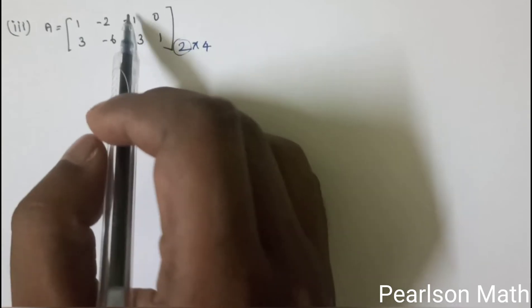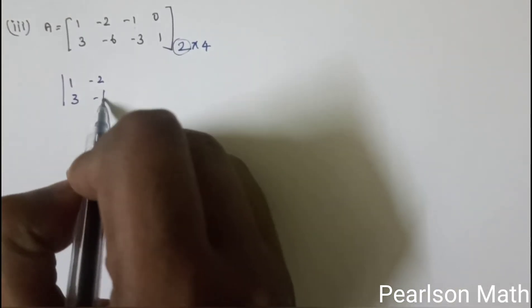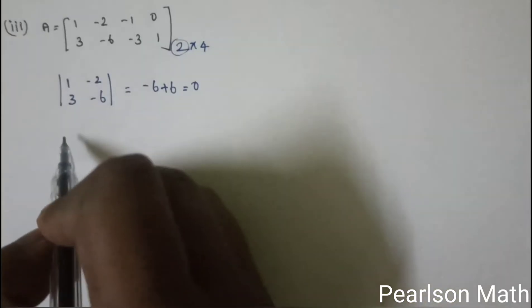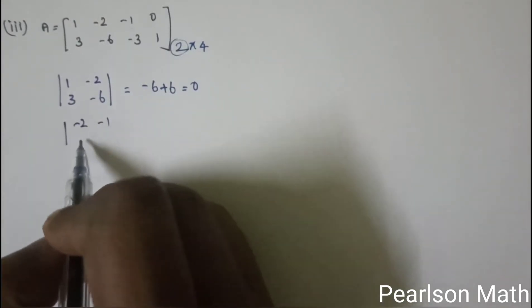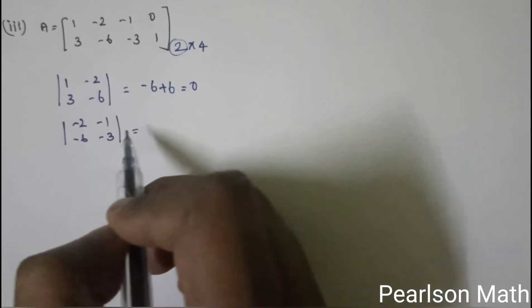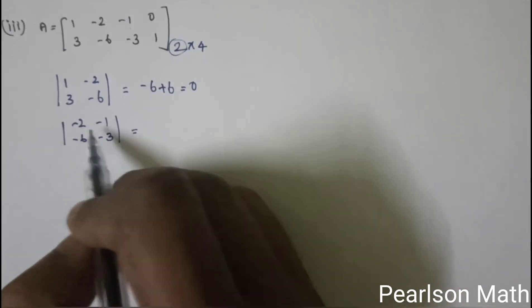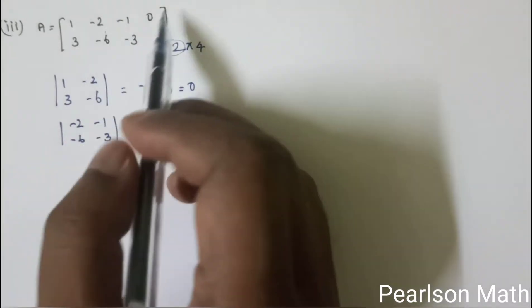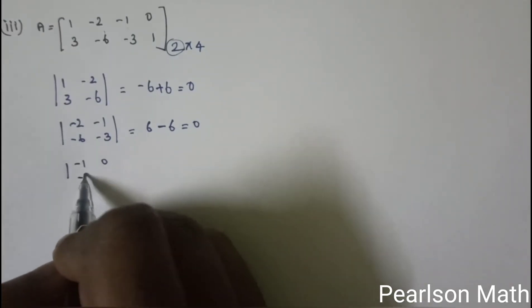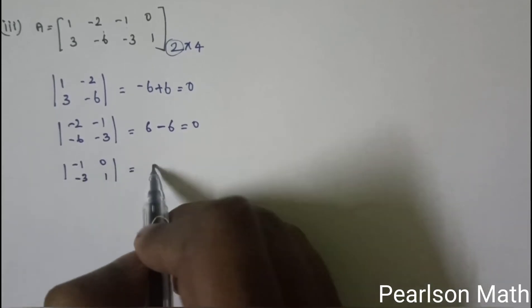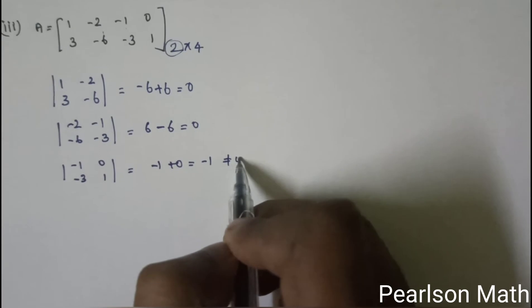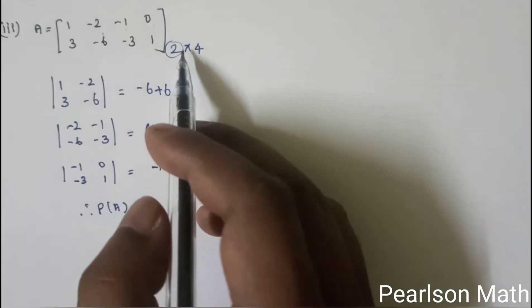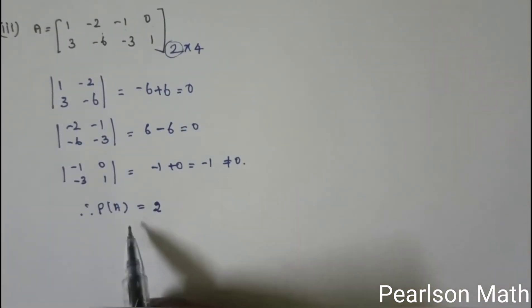We eliminate row 2 and column 2 to get the minor [1, -2; 3, -6] = −6 + 6 = 0. Another minor using [-2, -1; -6, -3] gives −3×−2 = 6, minus 6 = 0. Checking another 2×2 minor [-1, 0; -3, 1] = −1 + 0 = −1, not equal to 0. Therefore rank of A equals 2, and rank ≤ 2.